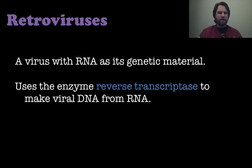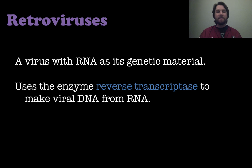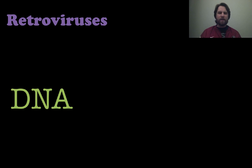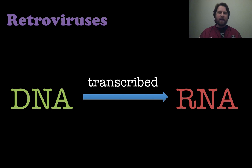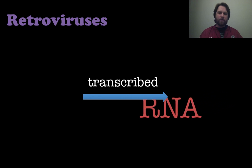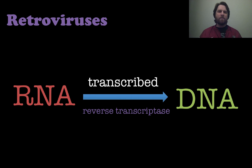Now let's talk about retroviruses. The flu virus has RNA as its genetic material, but very few types of flu are actually retroviruses. A retrovirus specifically has RNA as its genetic material — there are no retroviruses with DNA. What they do is use an enzyme called reverse transcriptase to make DNA from their RNA, reversing the normal process. Remember from biology: DNA is normally transcribed into RNA, and then the RNA is made into protein. What this virus does is infect the cell and reverse this process using reverse transcriptase. That's how it makes its viral DNA — by reversing the normal transcription process with this special enzyme.